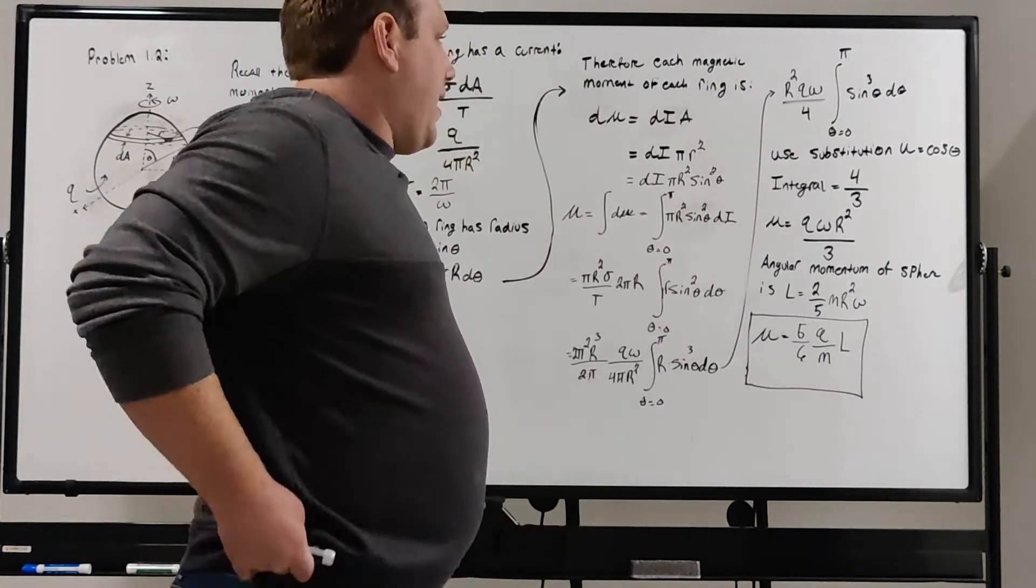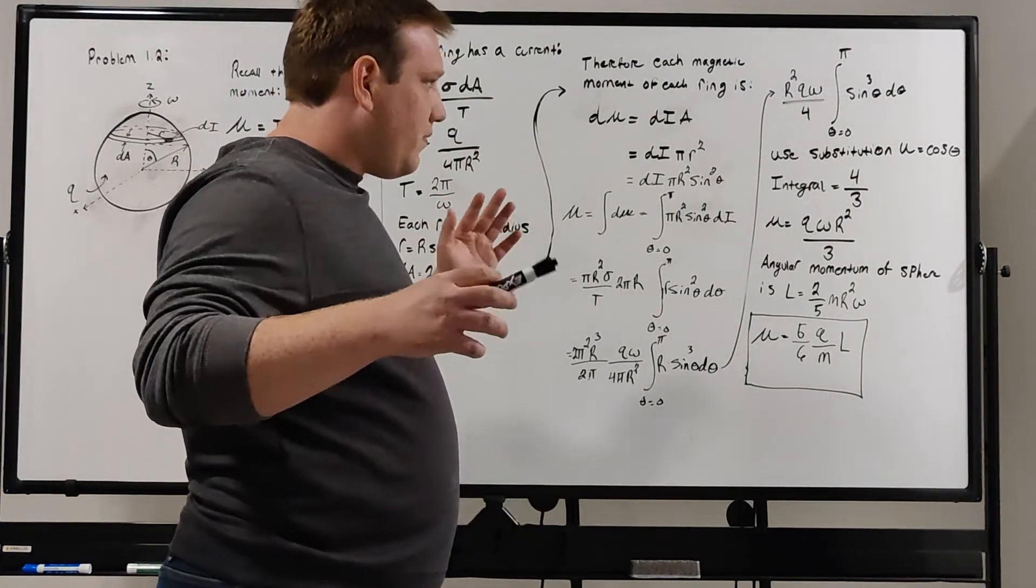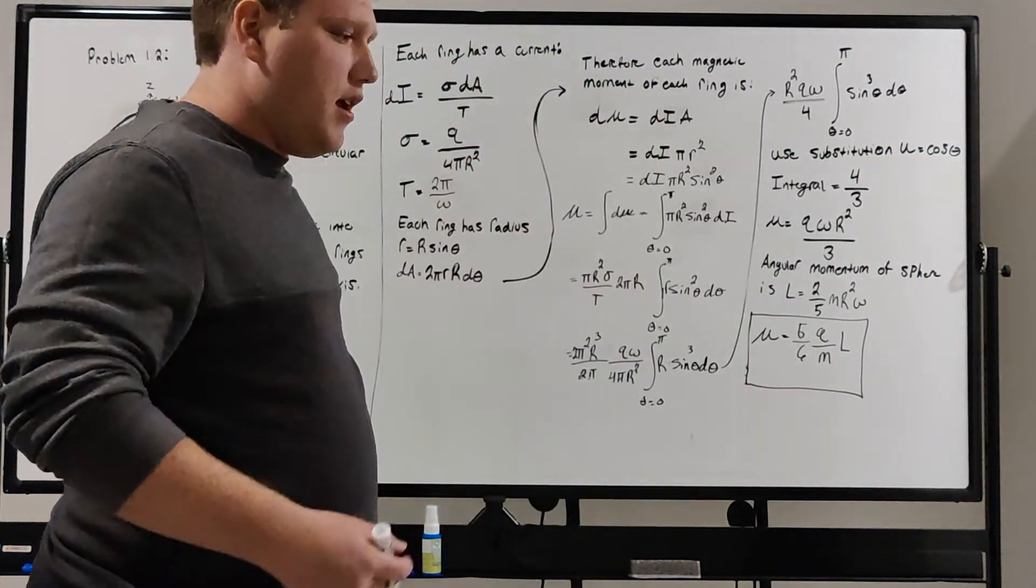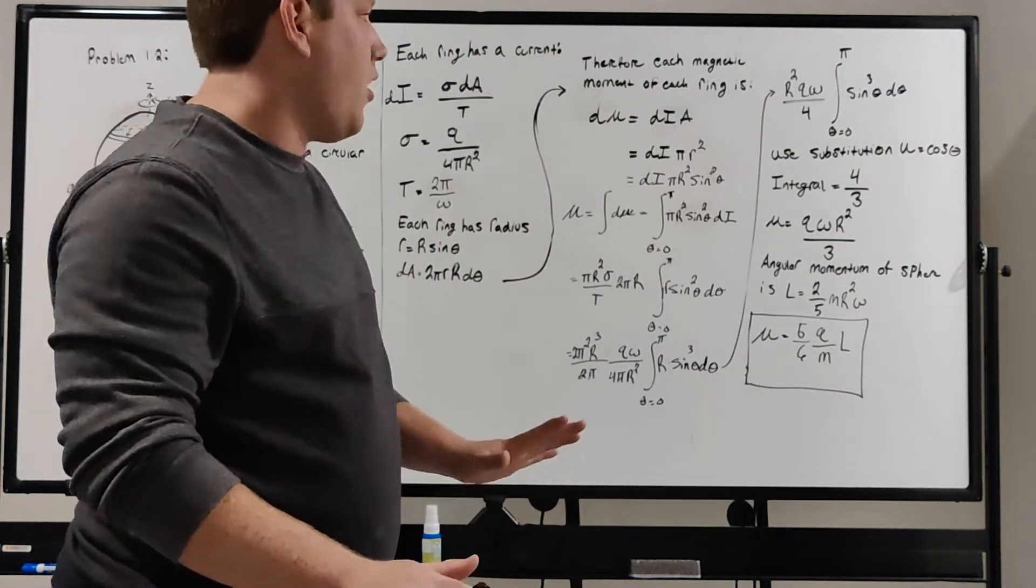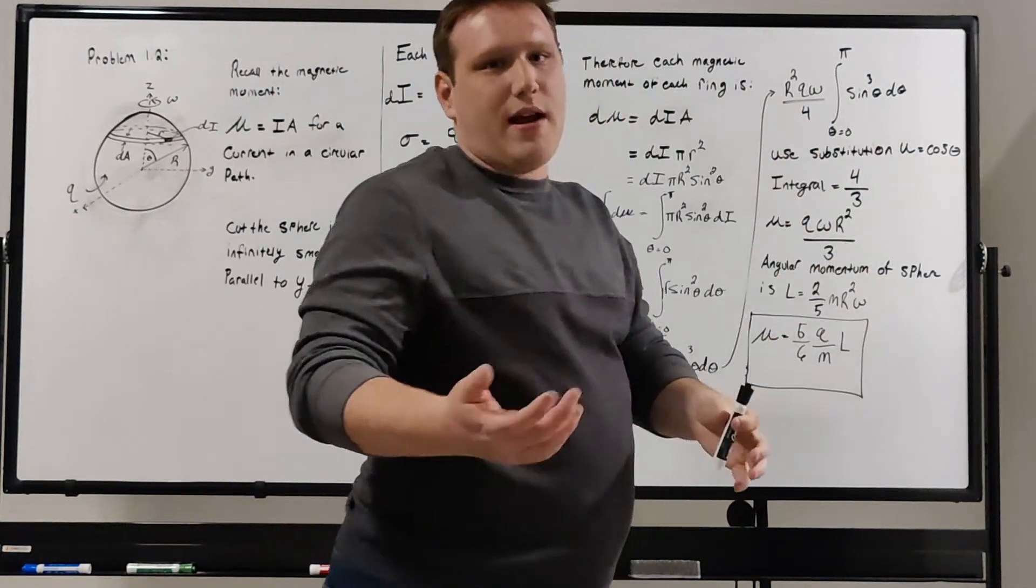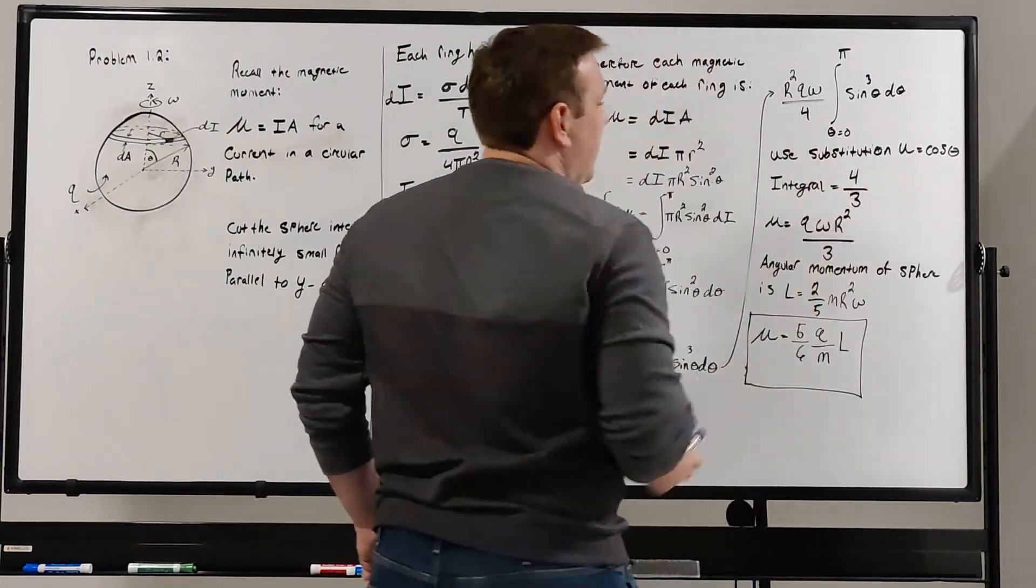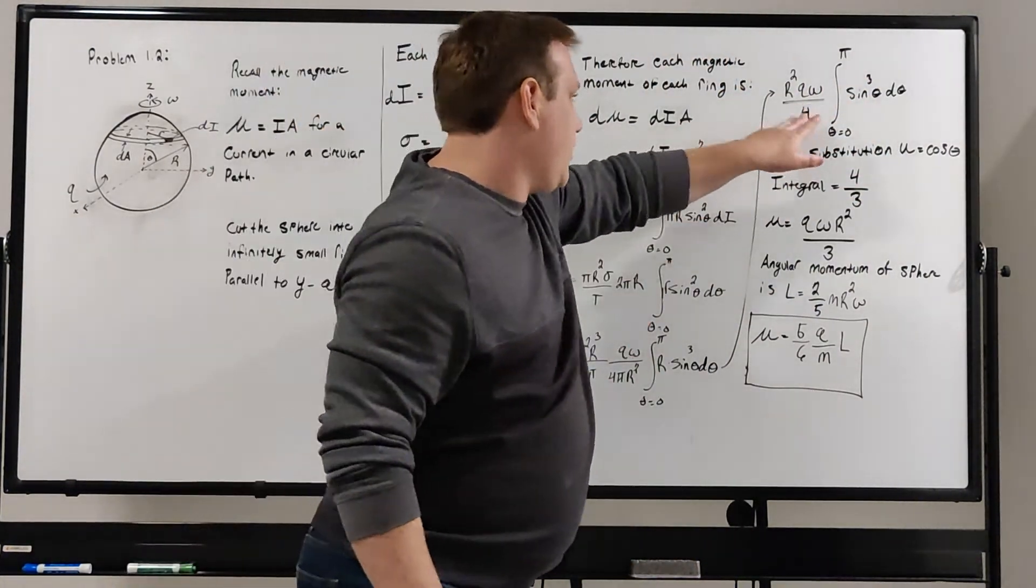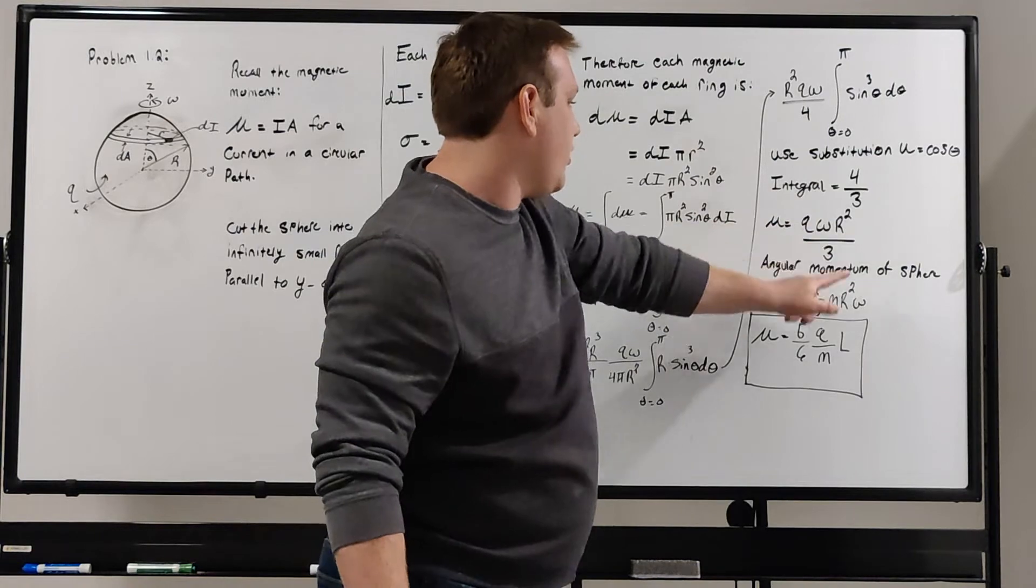I did not do this integral all out on the board, it's just too much. It's a pretty simple integral. Use a substitution of u equals cosine of theta, and you can get it to split into two very easy integrals. I just recommend quickly trying to do this integral to practice your integration techniques. When you get to the final answer, you should get that the integral equals 4 thirds after you plug in the bounds. Just doing the math here, what you get by multiplying the constant by 4 thirds is Q omega R squared over 3.